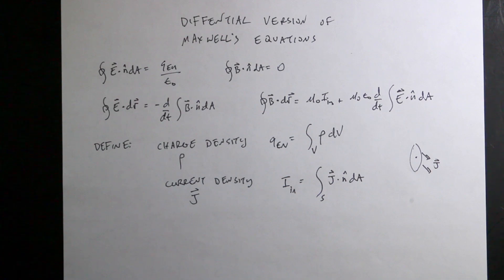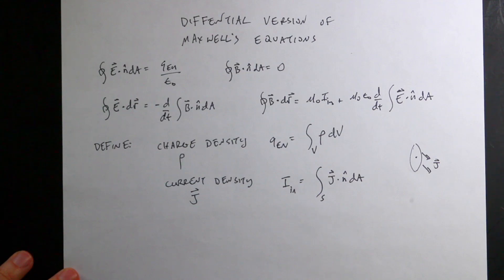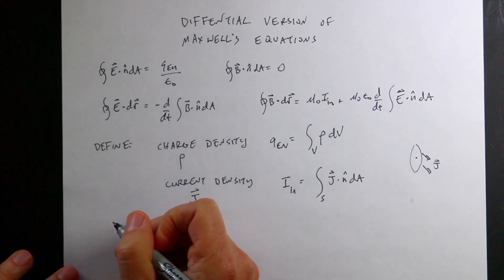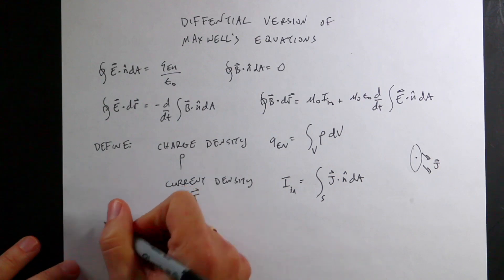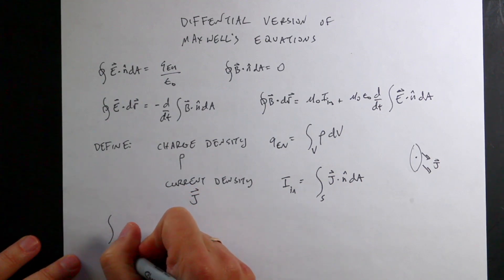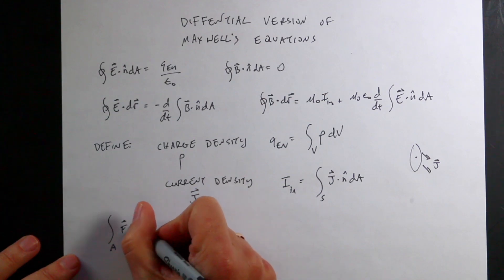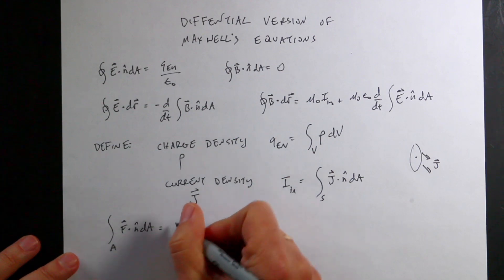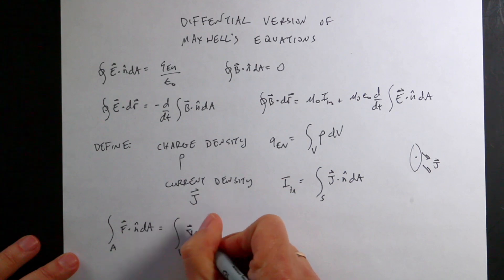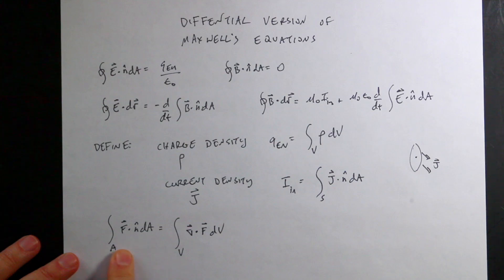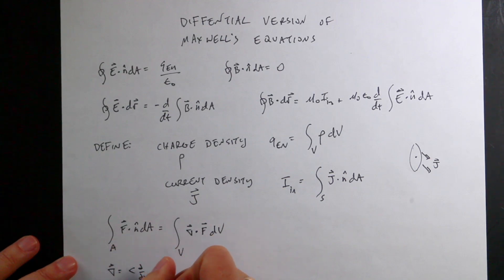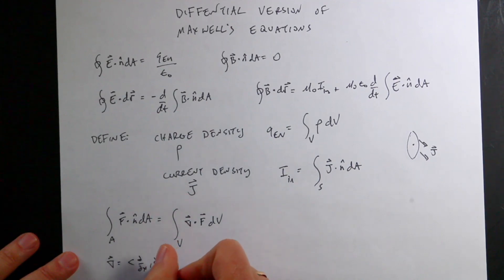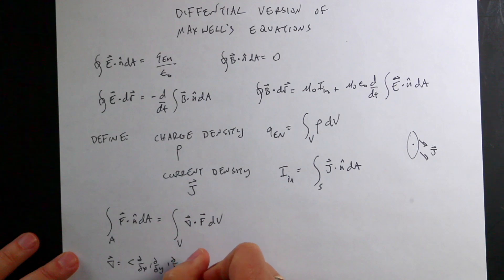Now let's write down two important mathematical tools. The first is the divergence theorem. For some vector function f, the surface integral of f dot N-hat dA over a closed surface equals the volume integral of del dot f dV. This lets us convert a surface integral into a volume integral. Here del is the operator with partial derivatives with respect to x, y, and z in Cartesian coordinates.